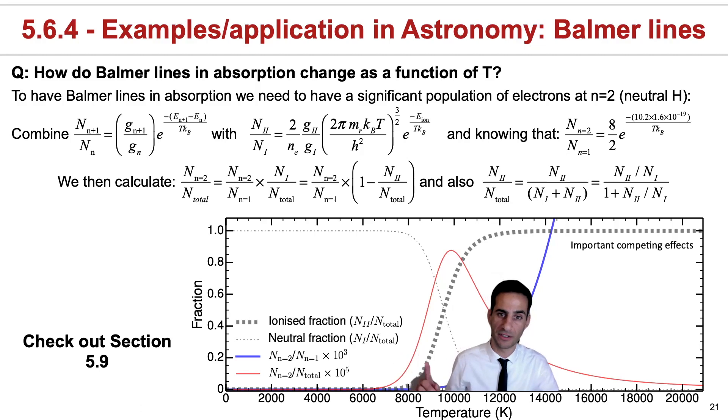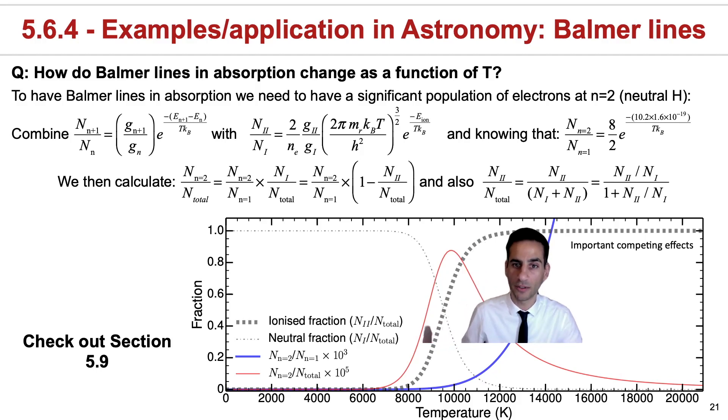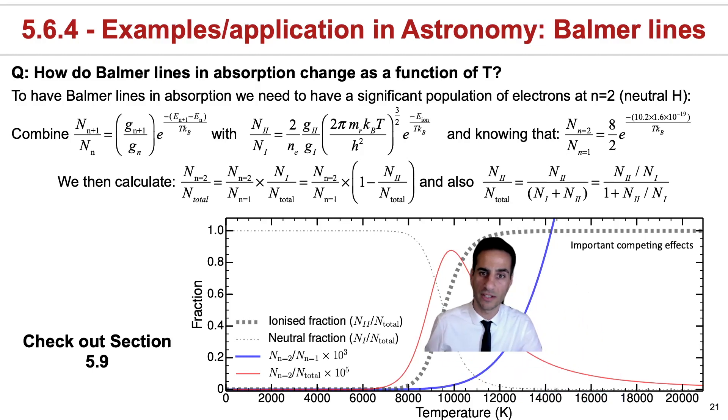That allows you to predict here the fraction of atoms that are ionized, or if you want, looking at this curve, the fraction of atoms that are actually neutral. If you want to predict how strong the Balmer lines should be in terms of temperature, then what you want is to look at the product of the blue line with this dot dashed line. And this is how you obtain actually the red line that's given here.